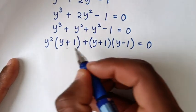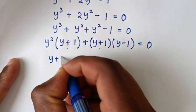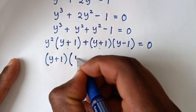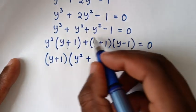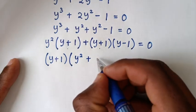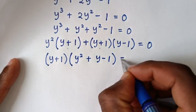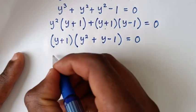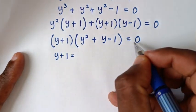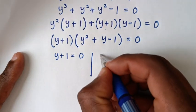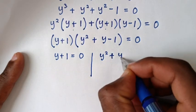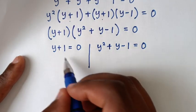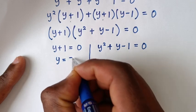Since (y + 1) is common, we factor it out: (y + 1)(y² + y - 1) = 0. This gives two solutions: first, y + 1 = 0, so y = -1; second, y² + y - 1 = 0.